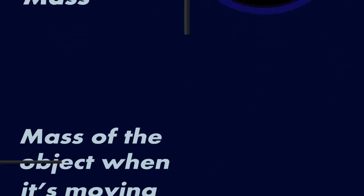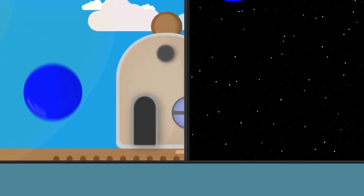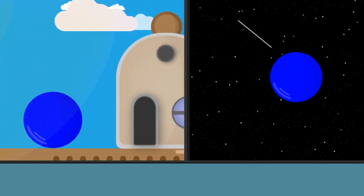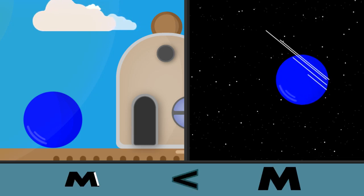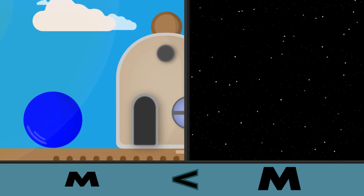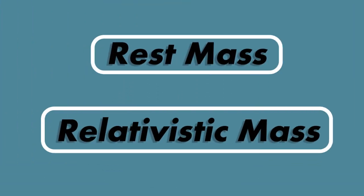Consider two identical bodies, one is stationary and the other one moving at a very high speed. Then the mass of the moving body would be much more than the stationary one, as the moving body is having the extra kinetic energy which the stationary one does not. Keep these two terms in mind, as I will be referring to these later in the video.